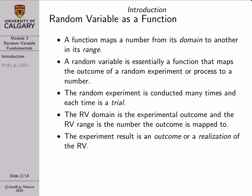I'm going to borrow an idea from the Populis Probability textbook, and in that textbook he refers to a random variable as a function, and I think that this is a very useful way to picture a random variable. Essentially, a random variable is a function that maps the outcome of a random experiment or process to a number.